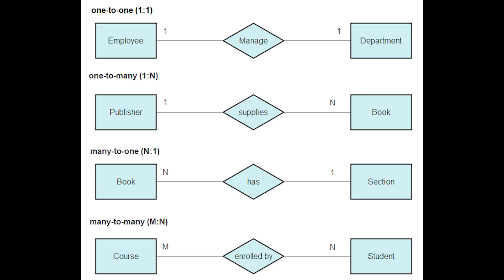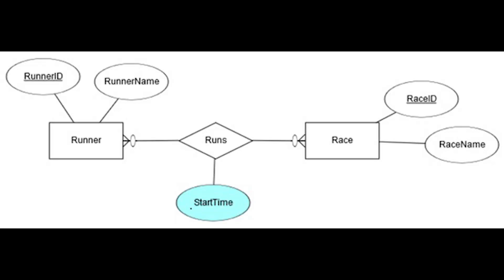This gives four combinations: one-one, one-N, N-one, and M-N. Relationship types are characterized per their maximum cardinality for each of their roles. Additionally, a relationship rhombus can have attributes just like an entity. If it's one-one or one-N, the attribute can be moved to a participating entity type, but for M-N it belongs to the relationship rhombus.